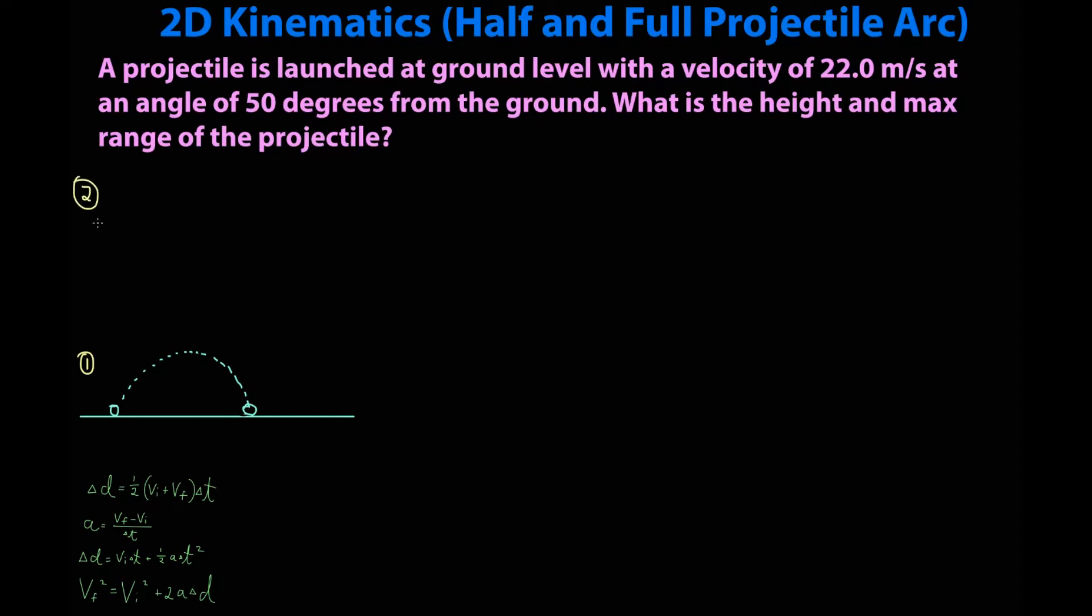Step two: Break up your initial velocity vector. A projectile is launched at ground level with a velocity of 22 meters per second at an angle of 50 degrees from the ground. Okay, this statement, 50 degrees from the ground.